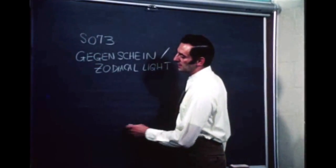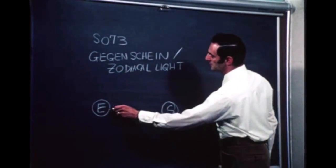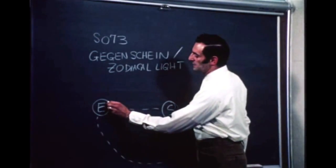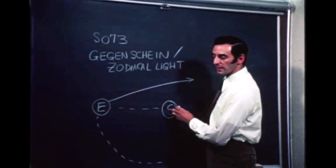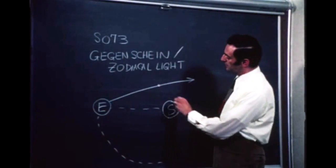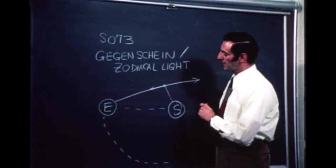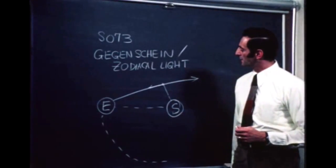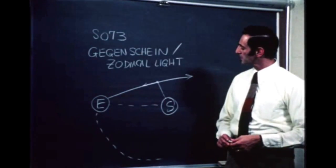If one looks down on the solar system from above, with the Earth here and the sun here, and the Earth in orbit about the sun — if you look in any direction from the Earth through the whole solar system, you'll see sunlight reflected back off any particles along that direction. For example, if I put a particle here, the sunlight strikes this particle and is reflected back toward the Earth. The same happens for all those particles along a particular direction, and this reflected light is what is called zodiacal light and is what we'll measure in this experiment.